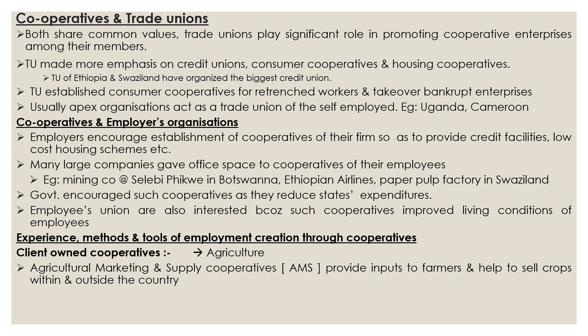Agricultural Marketing and Supply Cooperatives, otherwise known as AMS, provide inputs to farmers and help sell crops within and outside the country. They help farmers in disposing their products to local wholesalers and also help in exporting products to overseas customers. Some even own their own processing facilities and offer additional services like consumer distribution systems and financial intermediation.